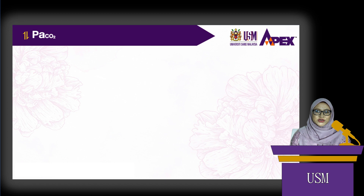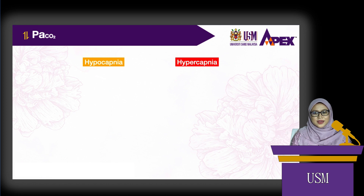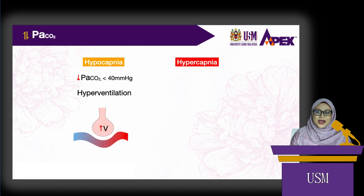When the arterial pressure of carbon dioxide decreases below normal, it is called hypocapnia. Hypocapnia is when the arterial pressure of carbon dioxide is lower than 40 mmHg. It can be caused by hyperventilation. When ventilation increases, the arterial pressure of oxygen increases while carbon dioxide decreases, hence the term hypocapnia.